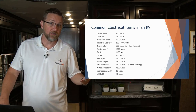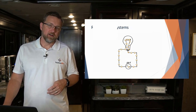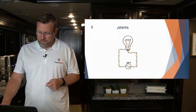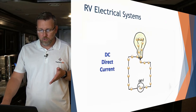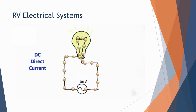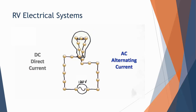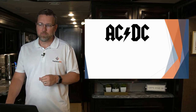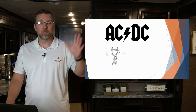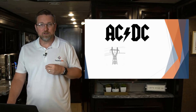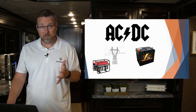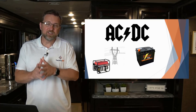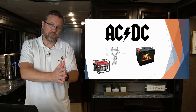An RV electrical system has basically two types of power. One is called direct current, or DC — the current goes in one direction. The other is called AC, alternating current — a back and forth thing. You're going to be using both DC and AC in your RV. AC comes from your power lines, that power pedestal you plug into. Your DC power comes from your batteries. If you have a generator, your RV will see the power from a generator the same as those power lines — it's AC power. Whether it's power lines or a generator, that's AC. DC comes from your batteries.